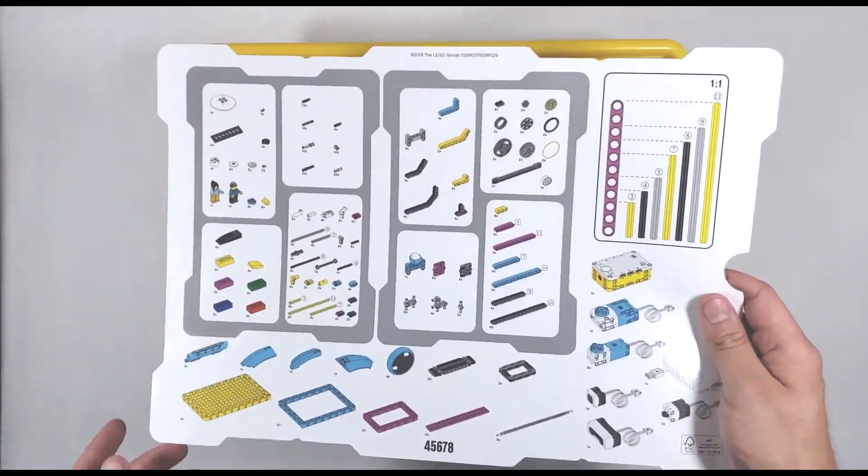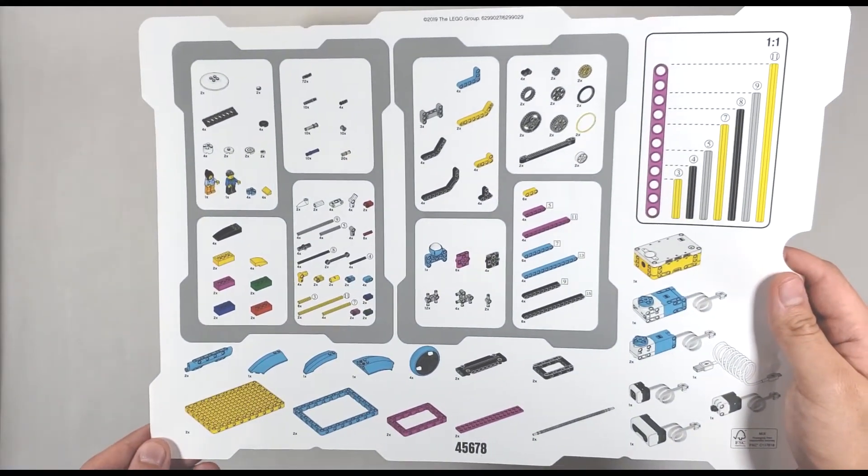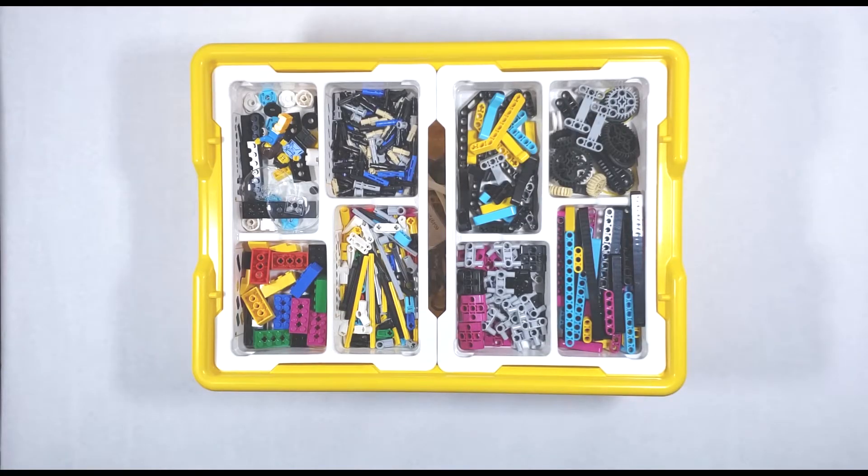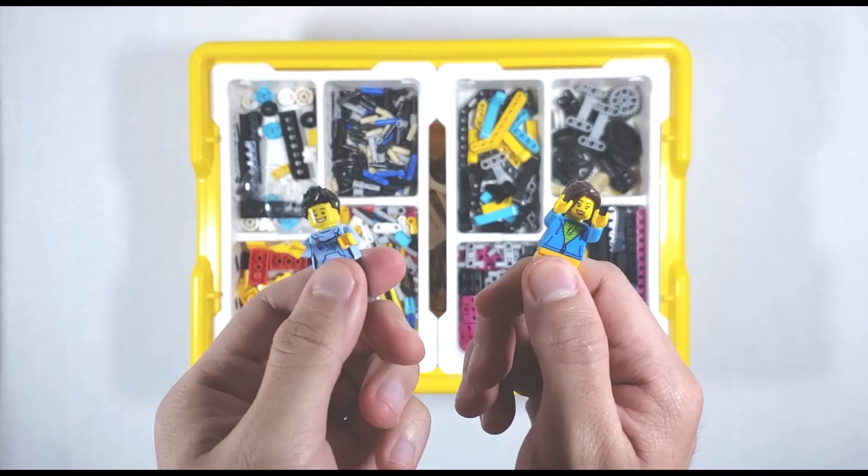At the very top of the box we have the parts list that organizes all the small building pieces you can store in the top two sorting trays of the kit. This includes pieces like axles, gears, beams, and even a pair of minifigures.